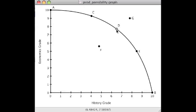Now in this graph, the other thing we want to look at are the two remaining points. Point F here means that somehow you're not making the most efficient use of your time. So it's a combination of grades, history and economics, that is below the line and thus not optimal. It's not making good efficient use of your time. So it's possible to be at point F, but not desirable.